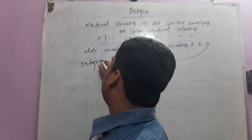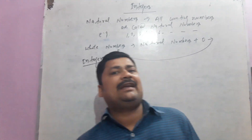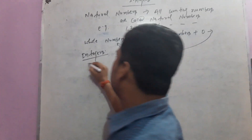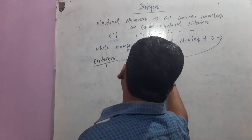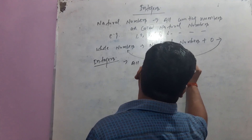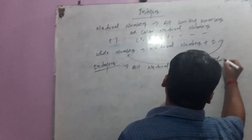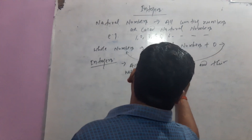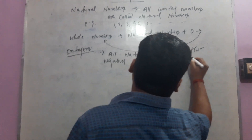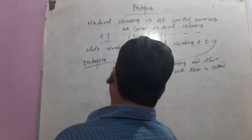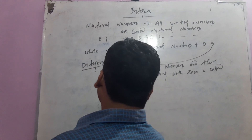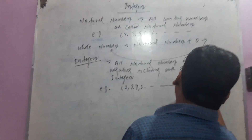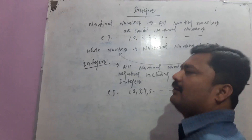All natural numbers and their negatives, including zero, are called integers. So the integers include: 1, 2, 3, 4, 5... (infinite), zero, minus 1, minus 2, minus 3, minus 4, and so on.